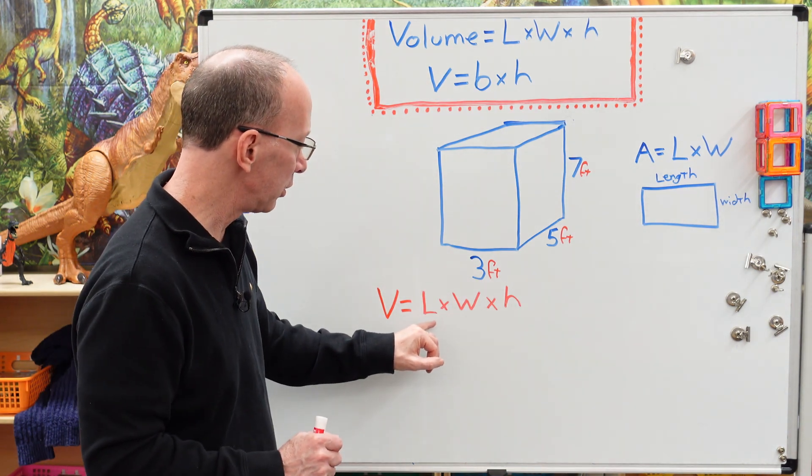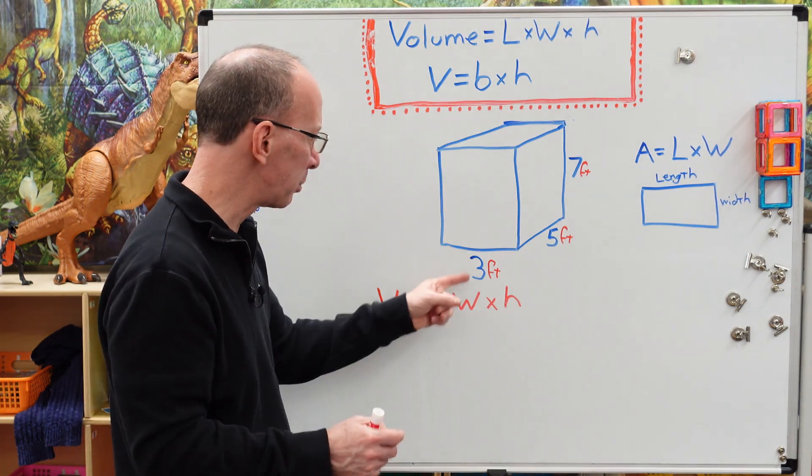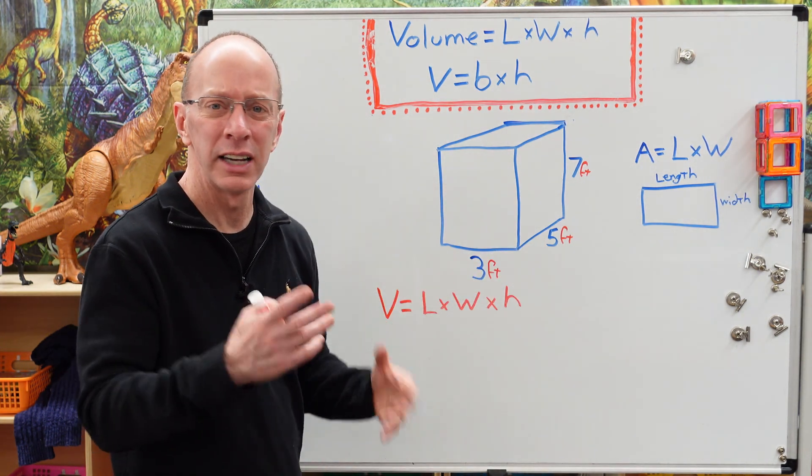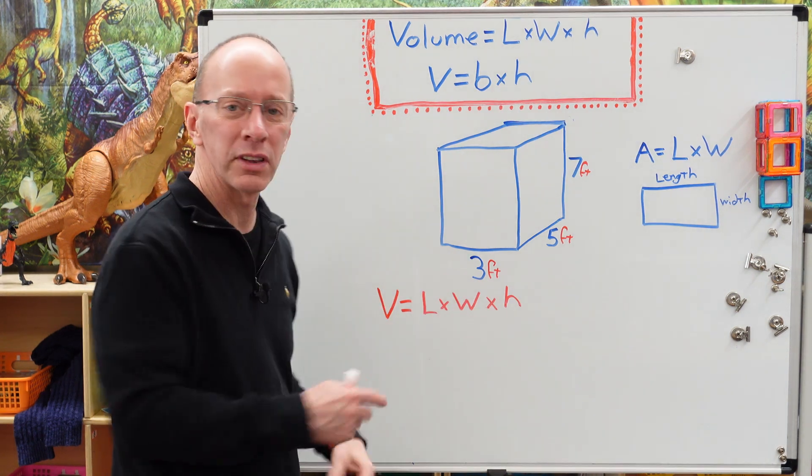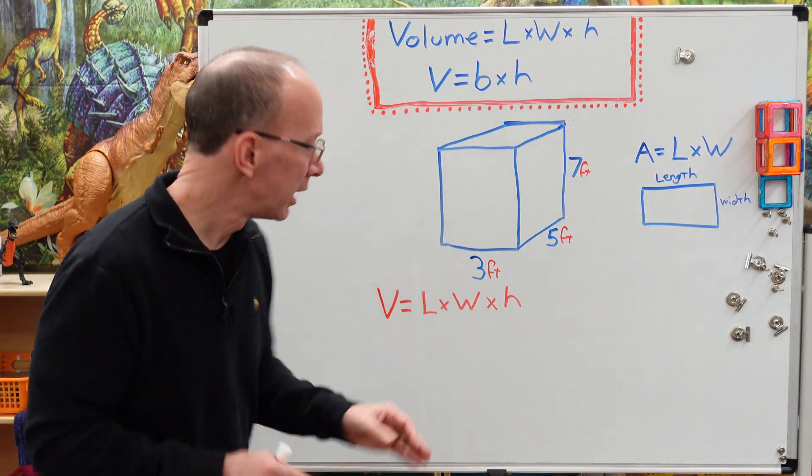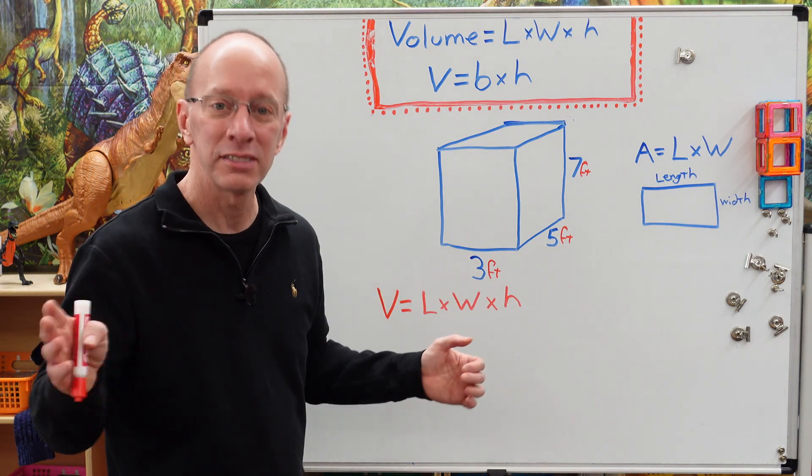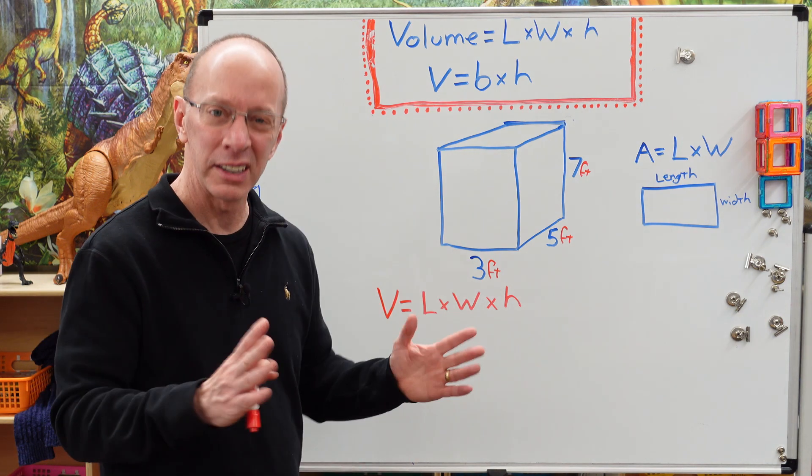So all we have to do is take our length and our width. So sometimes, you know, it's like, well, what should I put? Should I put the three or the five? It's not sure which one I should put for the length or the width. It doesn't really matter. It's all going to come out the same. But usually for length, it's going to be the longer side, and then the width will be the shorter side.